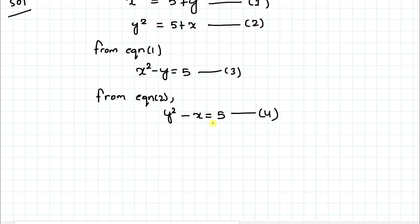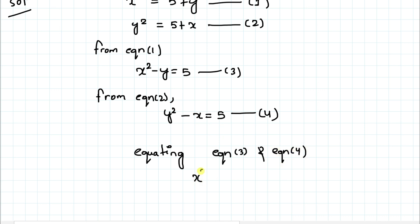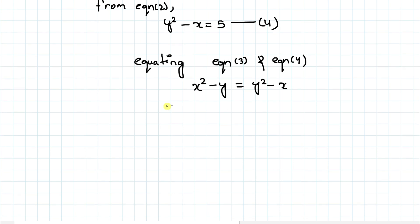Equating equation 3 and equation 4, we have x squared minus y equals y squared minus x. This implies we can rearrange: bring y squared to the left hand side and take minus y to the right hand side.